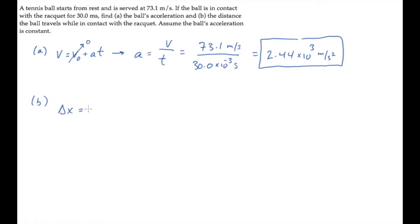The change in position, delta x, is the initial velocity times time plus half at squared. Again, the initial velocity is 0 because the ball starts from rest. So the displacement or change in position is half times a multiplied by the time squared. When you calculate, you find this equals 1.10 meters. That's the distance the ball moved while being hit by the racket.